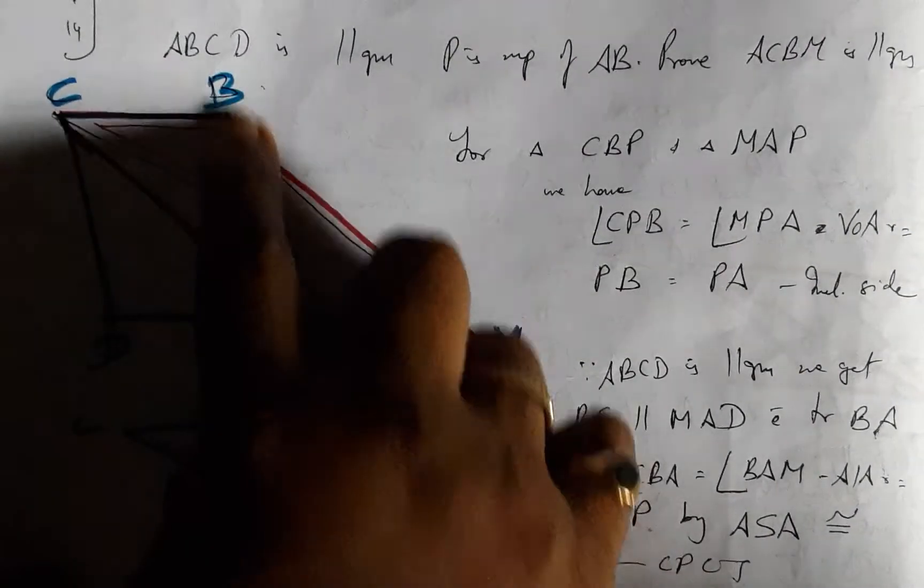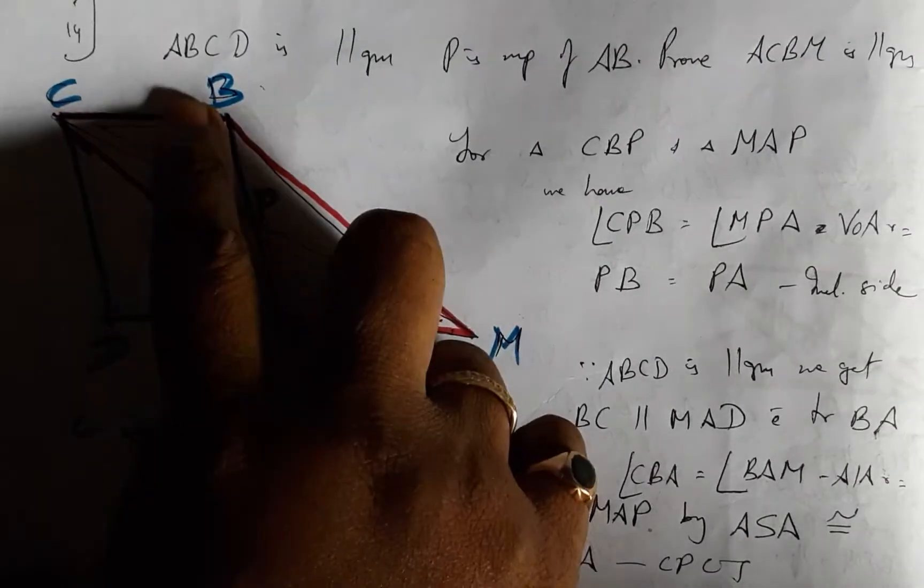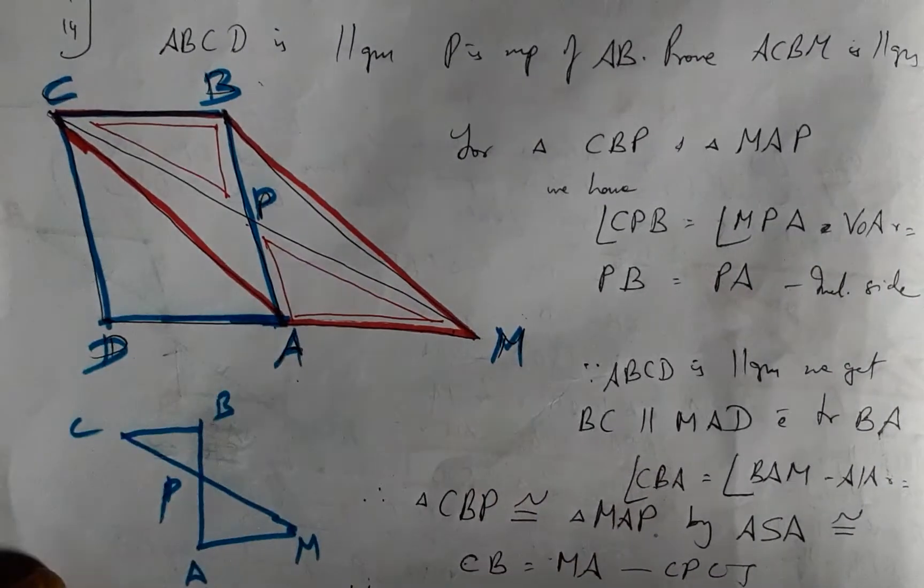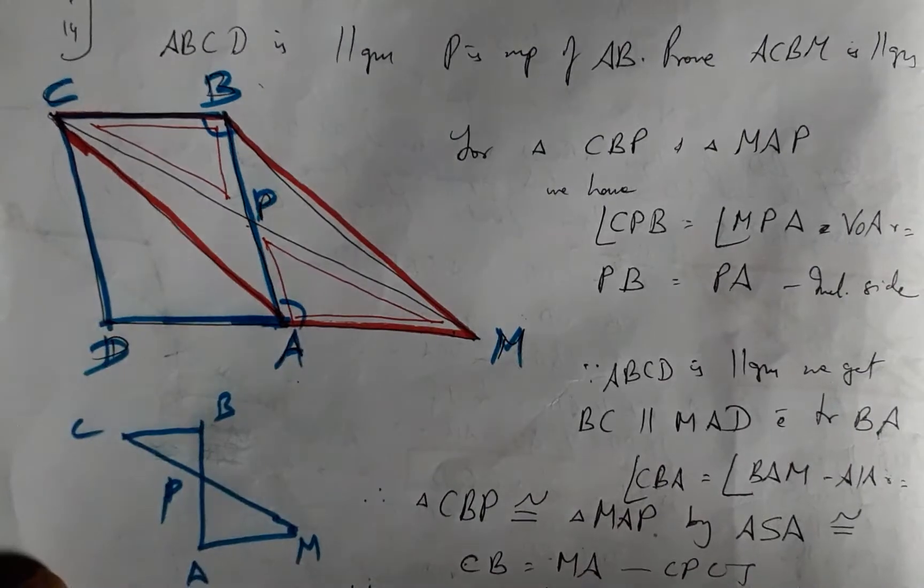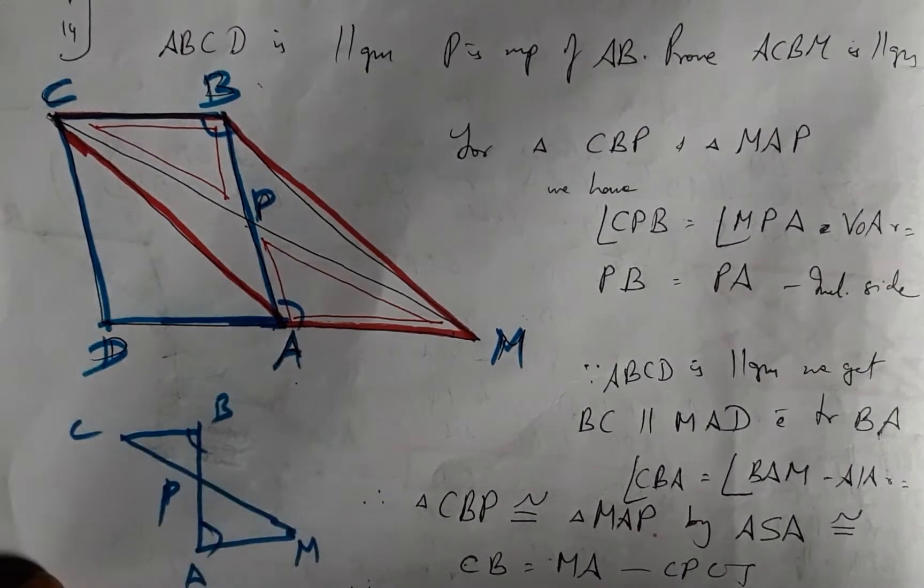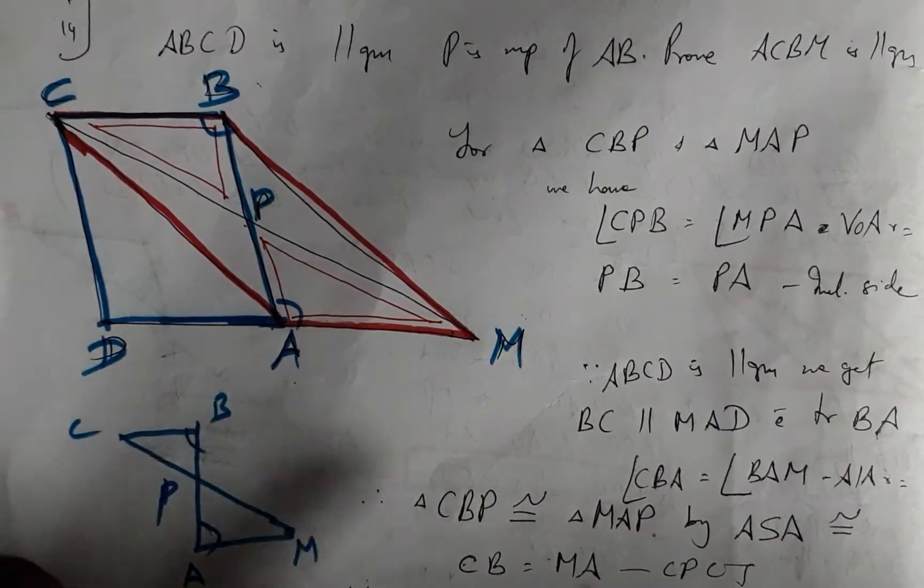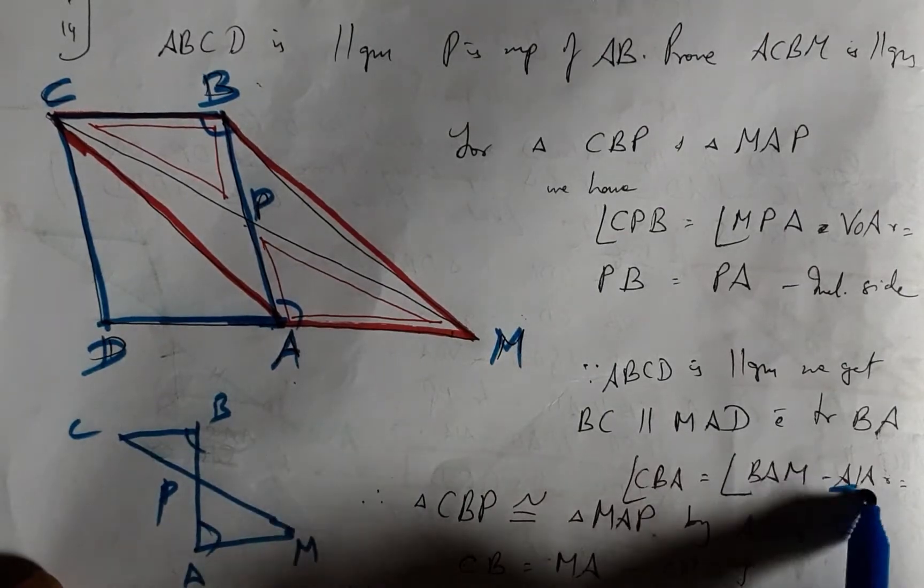CB parallel AM with transversal AB. We have angle B and angle K. This angle and this angle. Alternate interior angles are equal for these two things.